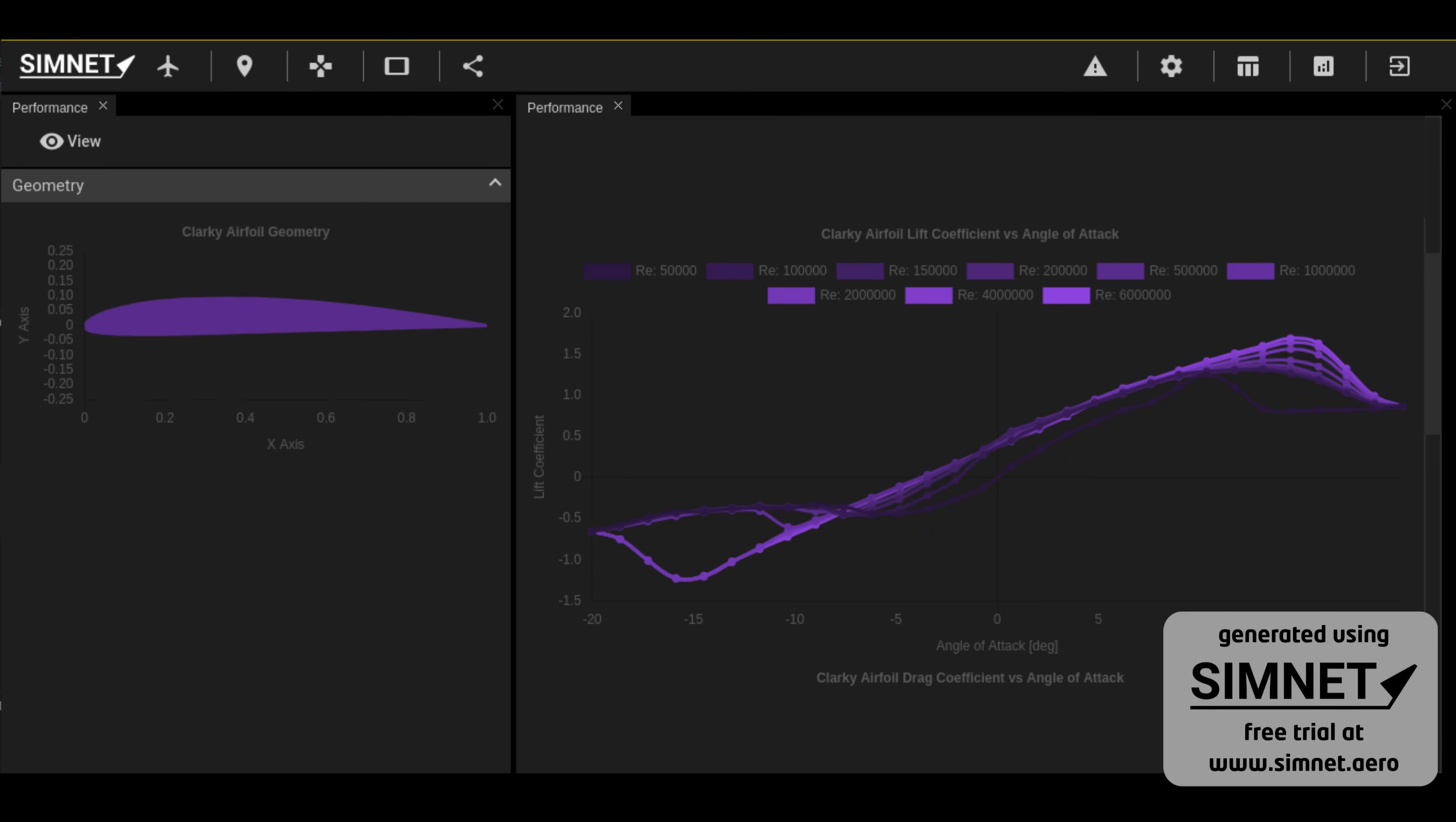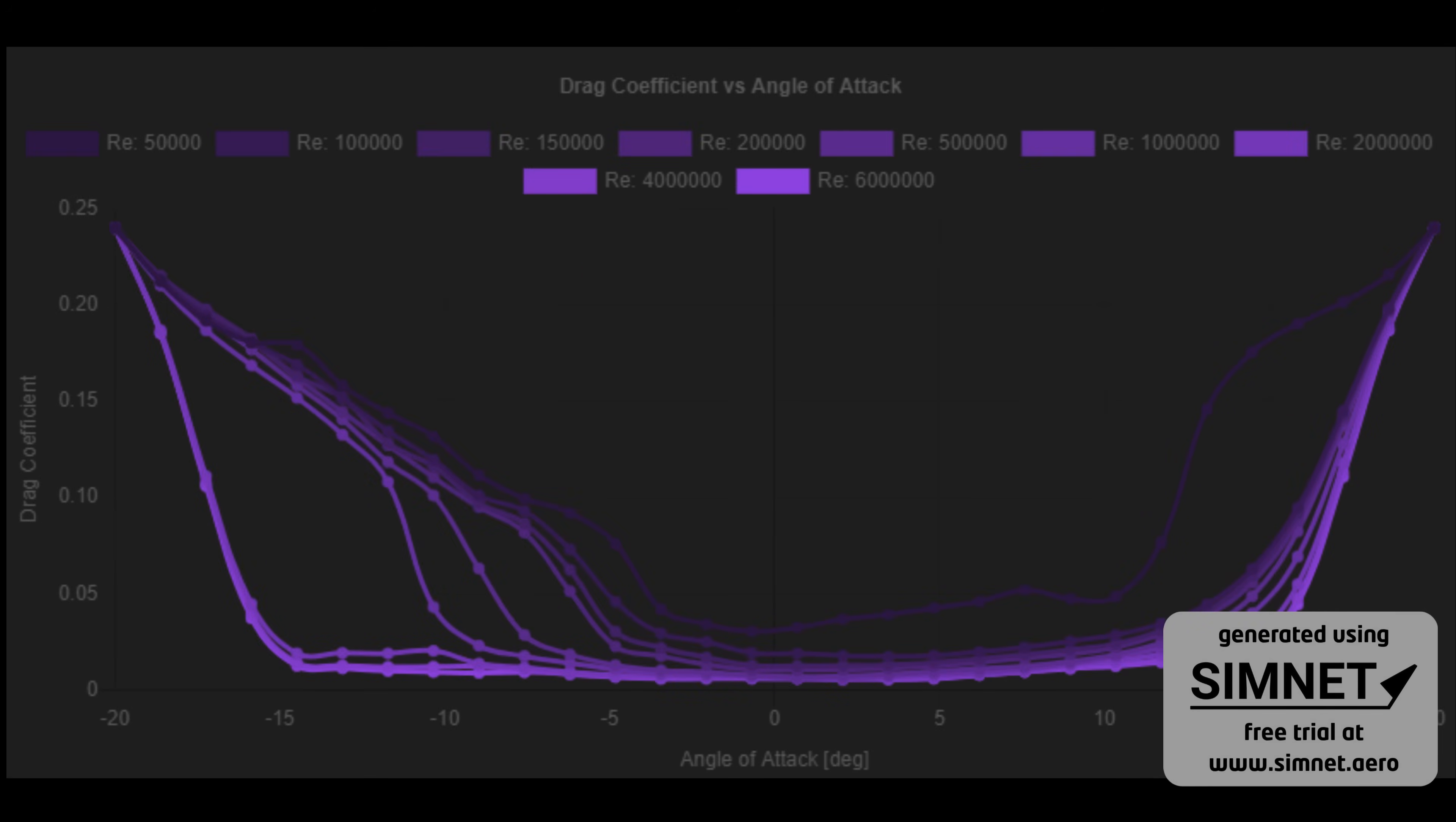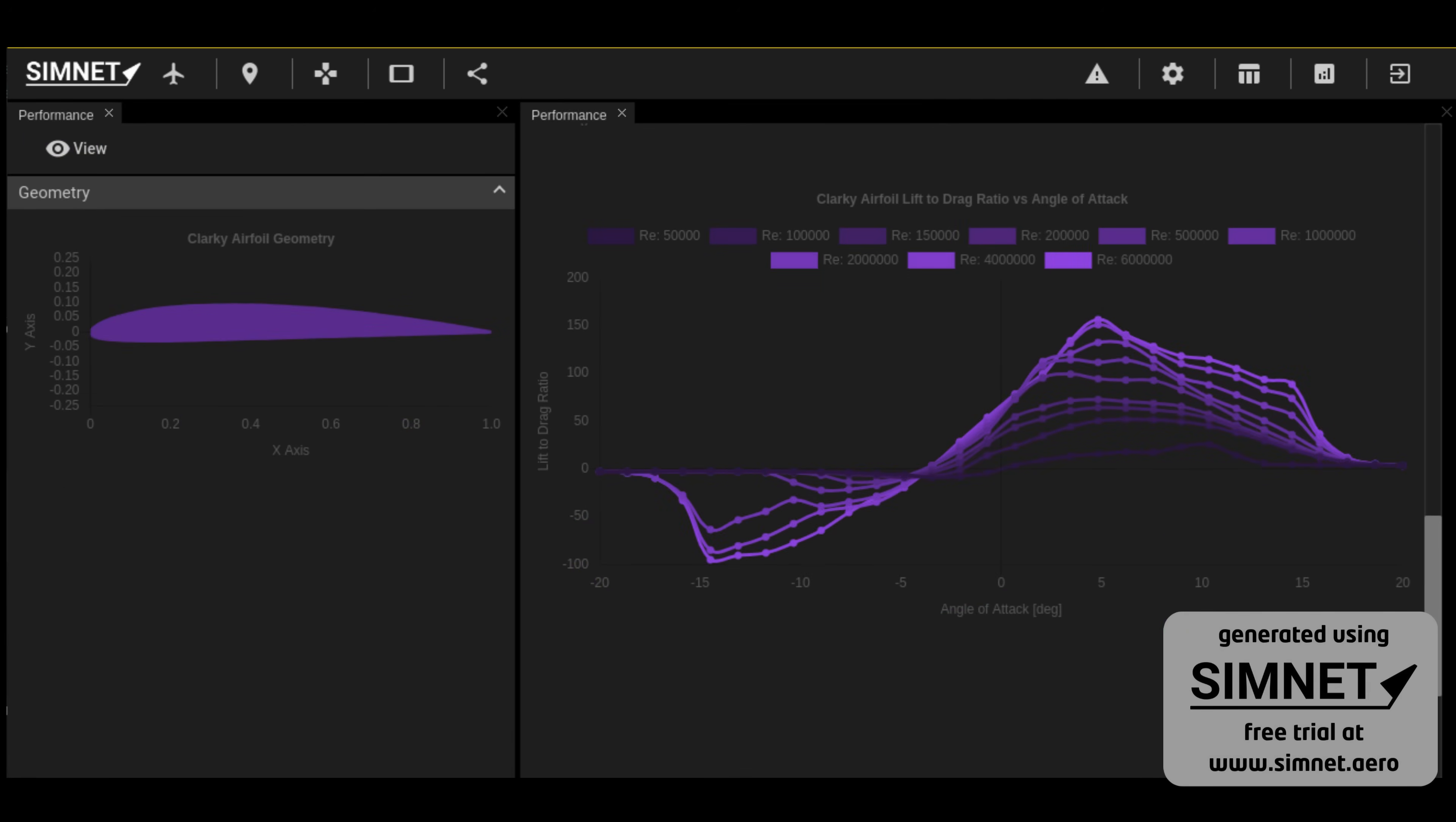This is a plot of an airfoil's drag coefficient versus angle of attack and Reynolds number. The drag coefficient of the airfoil is generally reduced with higher Reynolds numbers because of the reduction in form drag. The increase in lift and reduction in drag results in a higher aerodynamic efficiency at higher Reynolds numbers, as shown in this lift-to-drag plot.